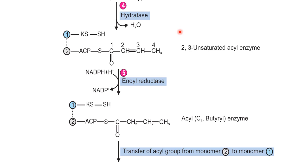The fourth step is the hydratase reaction: a dehydration reaction produces the two-three unsaturated acyl enzyme (two-three unsaturated acyl acyl carrier protein), with a double bond between the second and third carbons. In the fifth step, enoyl reductase reduces this two-three unsaturated acyl enzyme using NADPH (from the HMP shunt pathway), producing a four-carbon acyl enzyme also called butyryl acyl carrier protein.